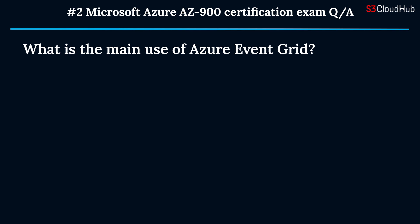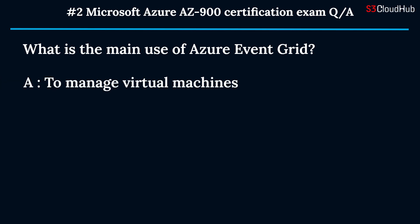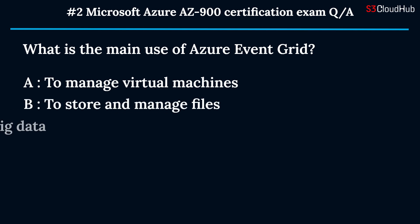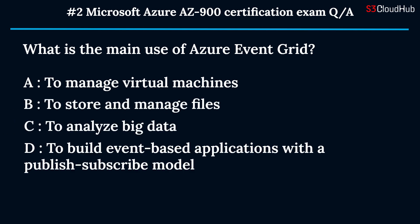The second question: what is the main use of Azure Event Grid? Option A: to manage virtual machines. Option B: to store and manage files. Option C: to analyze big data. Option D: to build event-based applications with a publish-subscribe model. The correct answer is option D: to build event-based applications with a publish-subscribe model.